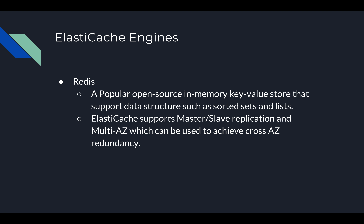The second engine is Redis, a very popular open-source in-memory key-value store that supports data structures such as sorted sets and lists. ElastiCache supports master-level replication and multi-availability zone deployments, which can be used to achieve cross-availability zone redundancy. This means it deploys across different nodes and regions, responds very fast, and also provides a backup system for data redundancy.